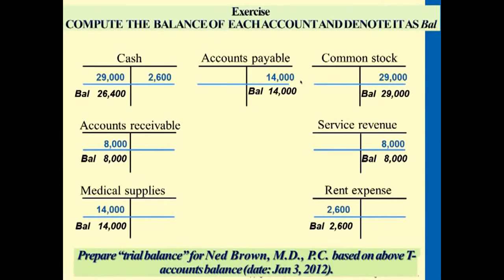Going back to this example, if we were to list the trial balance on a piece of paper, we'd list every account and find the total debits and total credits. Based on the balances shown in each T-account, try to figure out the total debits and the total credits, and see if they are the same.